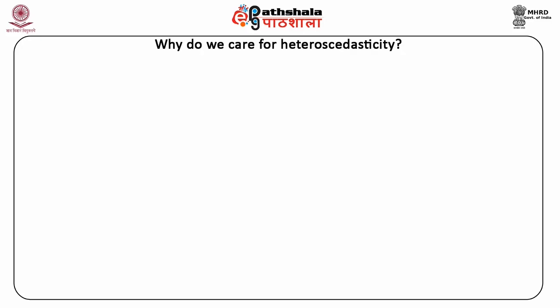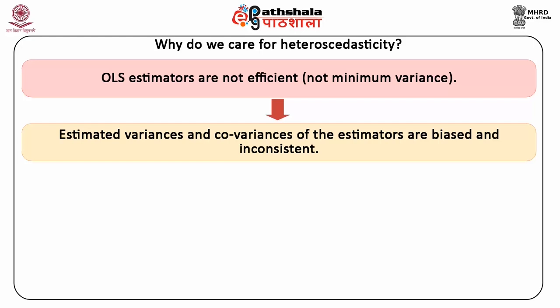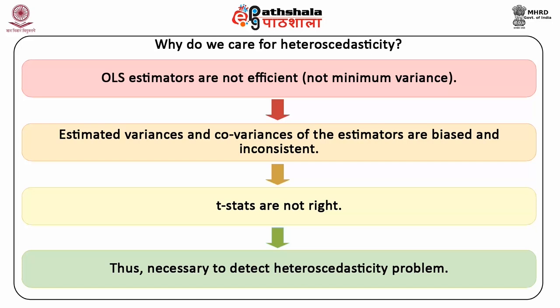To begin with, let's look at some of the problems which we may encounter if we ignore the problem of heteroscedasticity. OLS estimators will no longer remain efficient, i.e., they will not have minimum variance. Estimated variances and covariances of the estimators will become biased and inconsistent. Moreover, hypothesis testing based on t-stats will not be right. Thus, all these problems make it necessary to detect the heteroscedasticity problem.